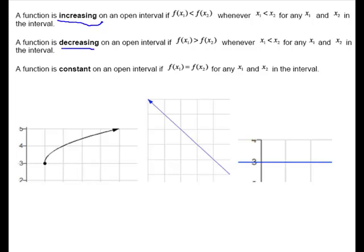A function is decreasing on an interval if f(x₁) is greater than f(x₂) when x₁ is less than x₂ — meaning it's going down. The third definition: a function is constant on an open interval when it has the same value for any x₁ and x₂ in the interval — a flat, horizontal line.